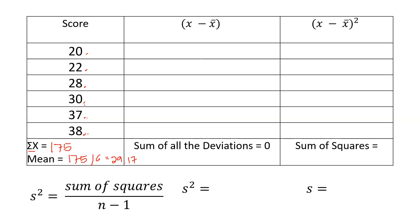In the deviation method, we determine the deviation or the distance of each score from the mean, and we do that in the second column. To compute for the deviation of the first number, 20, we get the difference between 20 and the mean. So 20 minus 29.17 gives a deviation of negative 9.17. This is the distance of 20 from the mean, which is 29.17. Then we follow the same formula for all the given numbers.